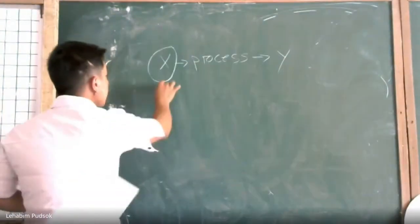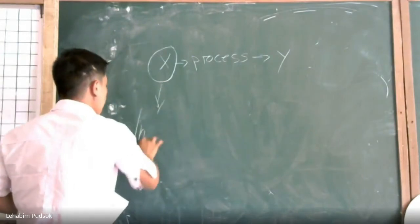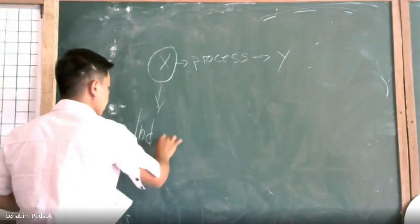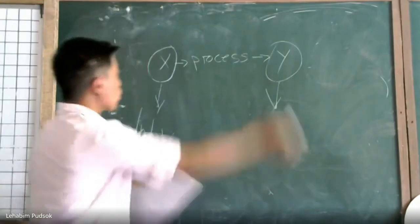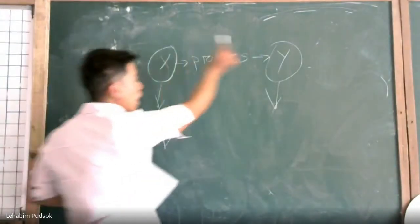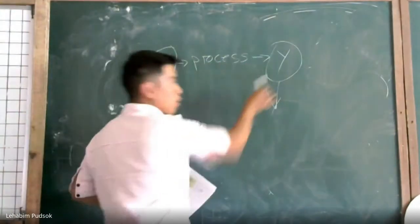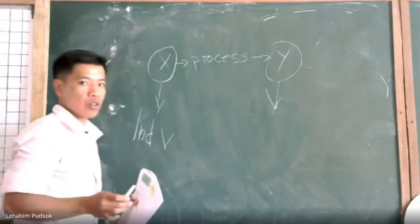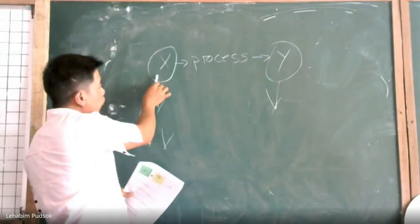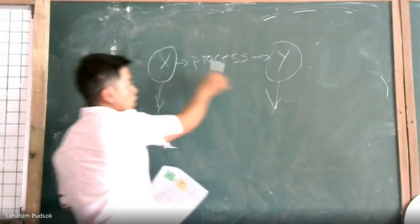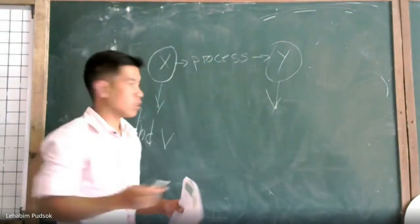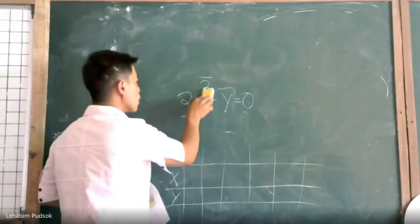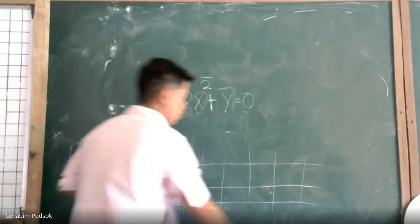That is our independent variable x. Because of x, y also has a new value. Meaning, if you change the value of x, the value of y varies also.